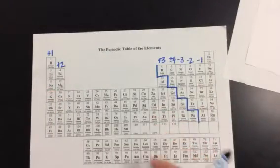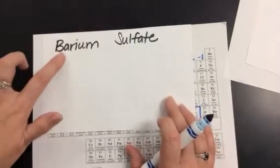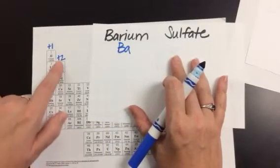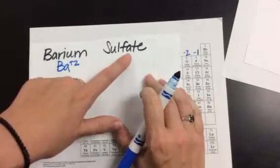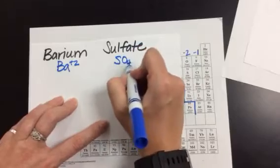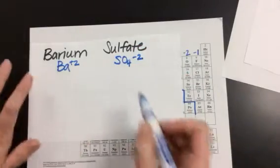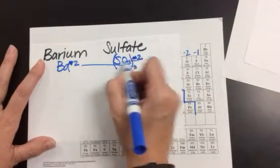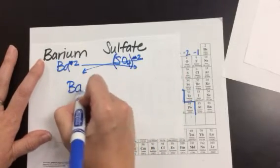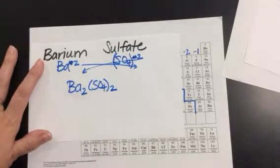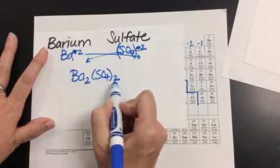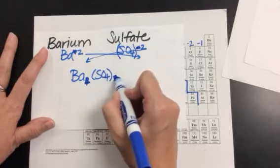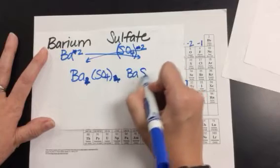Now to do another example: I have barium sulfate. Barium's symbol is Ba, and it has a plus 2 charge. Sulfate is another polyatomic ion — SO4, negative 2. So when I swap and drop, I lock sulfate in parentheses, the plus and minus disappear, and the 2s cross over. That makes Ba2(SO4)2. But when both numbers are the same, they need to be reduced — 2 divided by 2 is 1 — so my final formula is BaSO4. I don't have to put sulfate in parentheses here because there's only one of them.